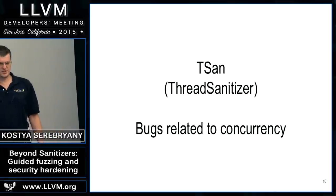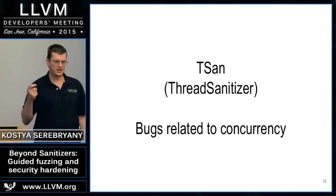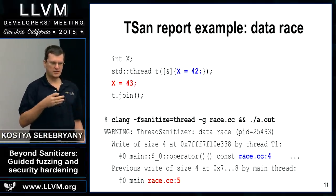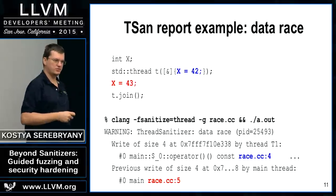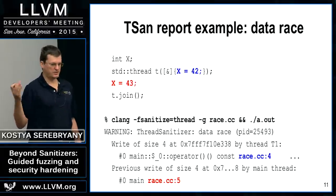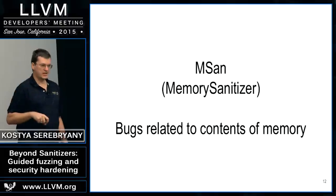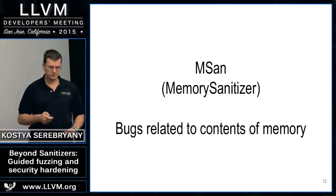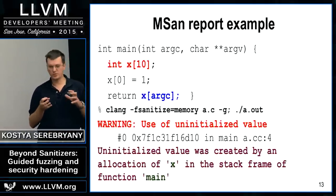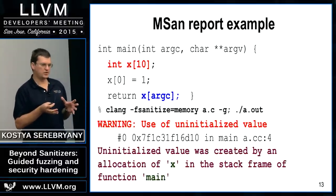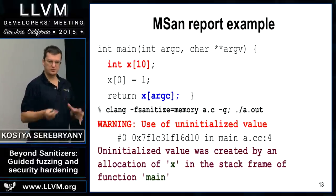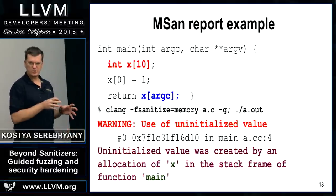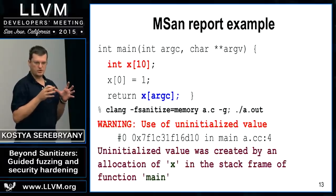The next sanitizer is called TSan, thread sanitizer. It finds concurrency bugs — usually data races. If you have a data race in your program and if this code is actually executed during runtime, TSan will detect it and report it. Next is MSan, memory sanitizer. It finds bugs related to the contents of memory — specifically, cases where you use uninitialized memory in a way that affects program behavior, such as using garbage bits to change the exit status.